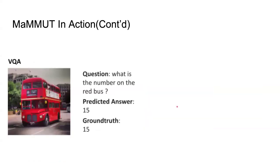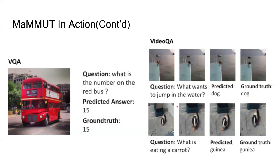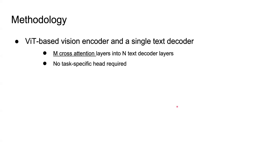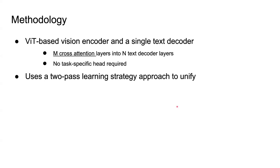Now for the details of the methodology: MaMMUT uses one encoder with a ViT backbone and a single text decoder. Inside the decoder, since one decoder handles both unimodal and multimodal tasks simultaneously, you need cross-attention layers inside the text decoder layers. The ratio of cross-attention to decoder layers is basically a trade-off between model capacity and generative capability — in the paper they set it to half, so for every two text decoder layers there is one cross-attention layer. One specific thing is that although the model is capable of handling different kinds of tasks, the authors didn't use any task-specific heads.